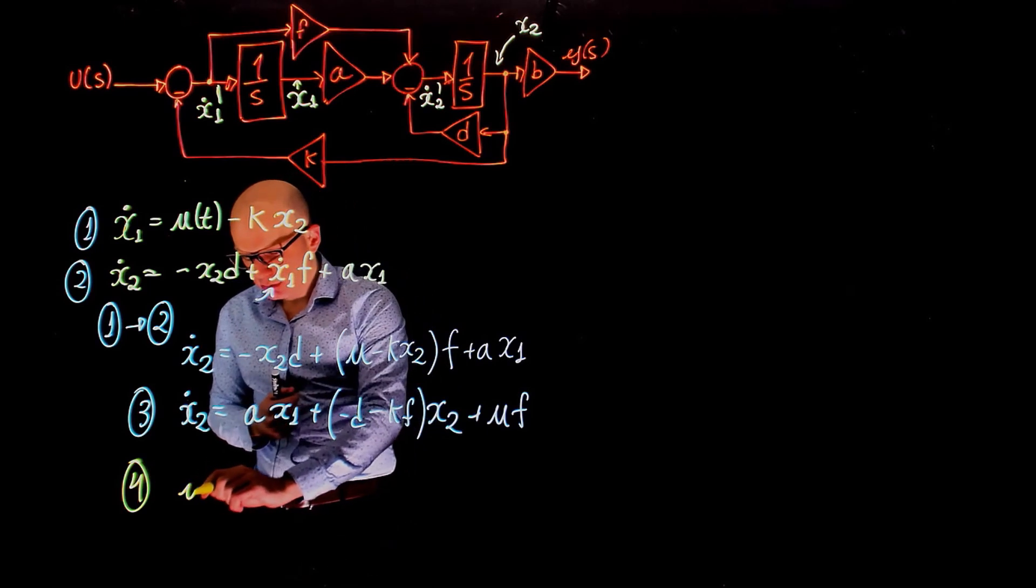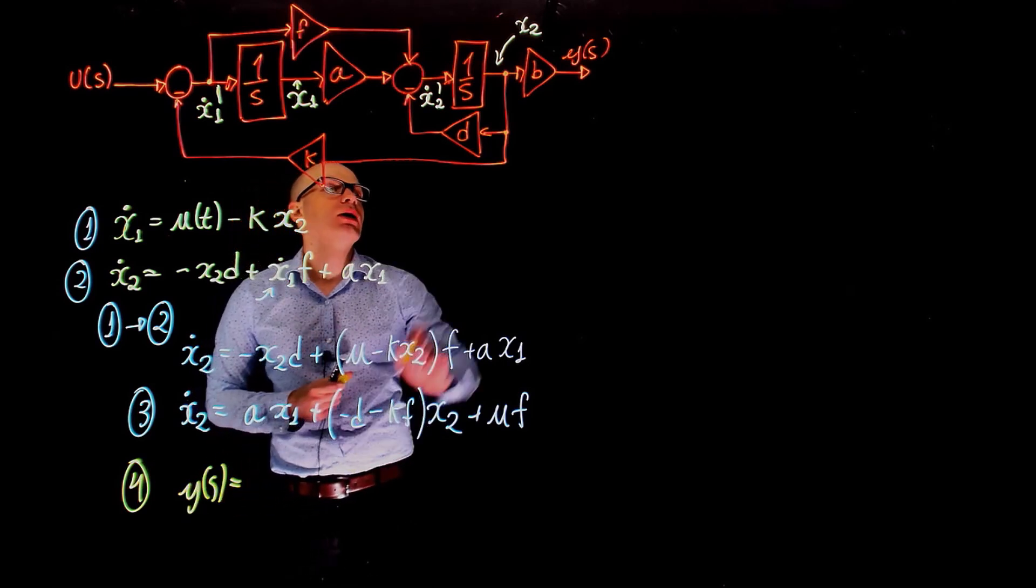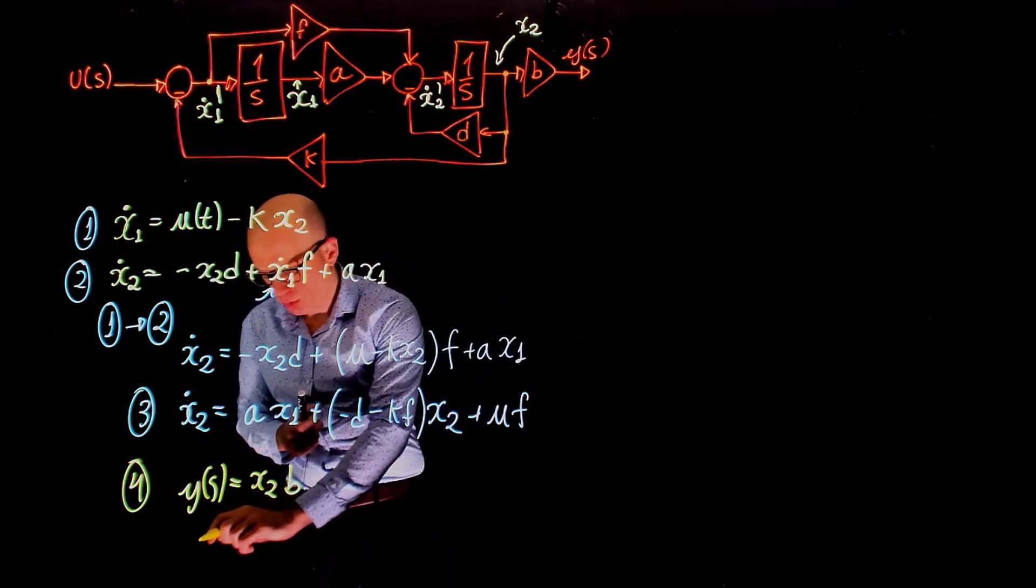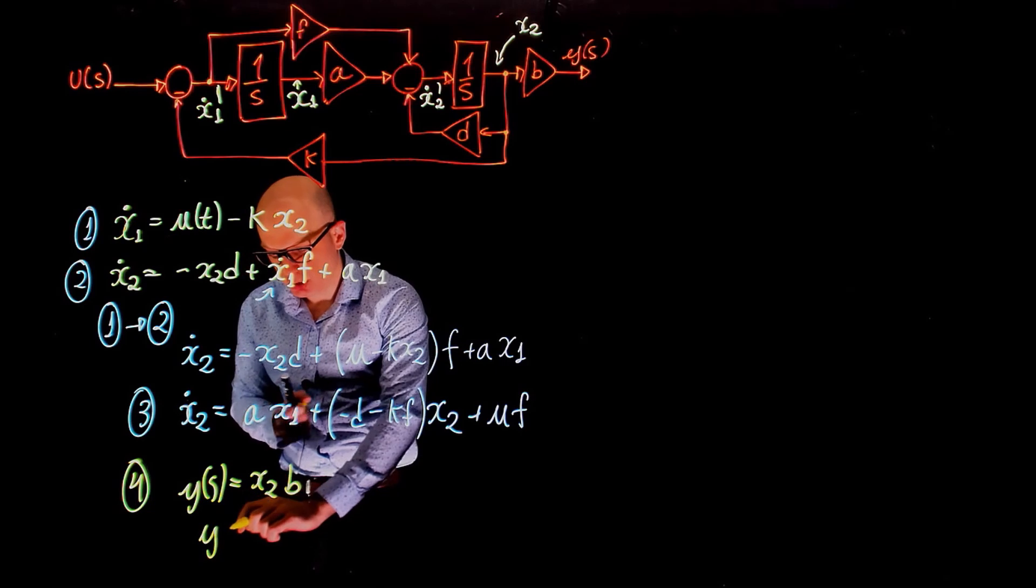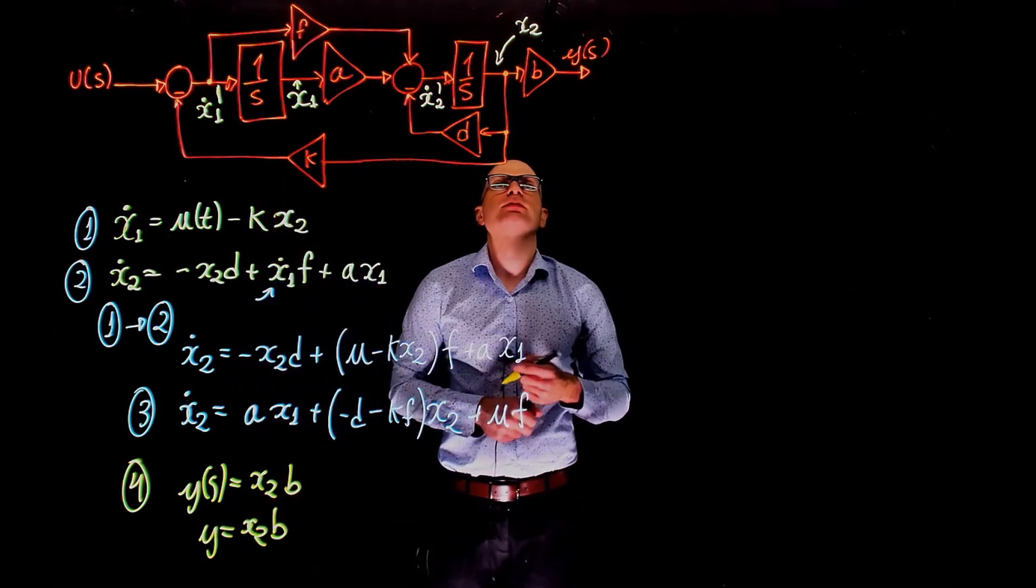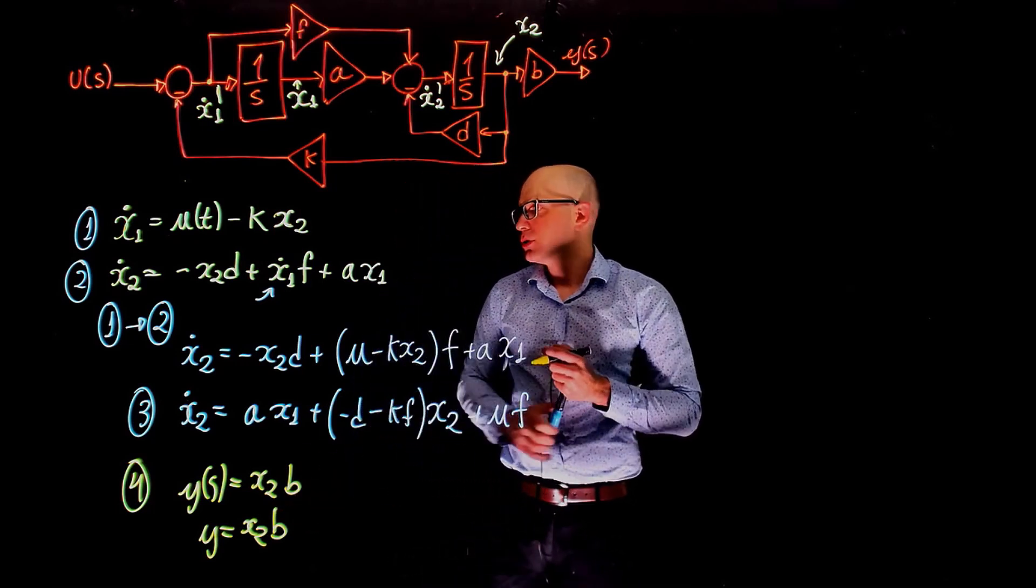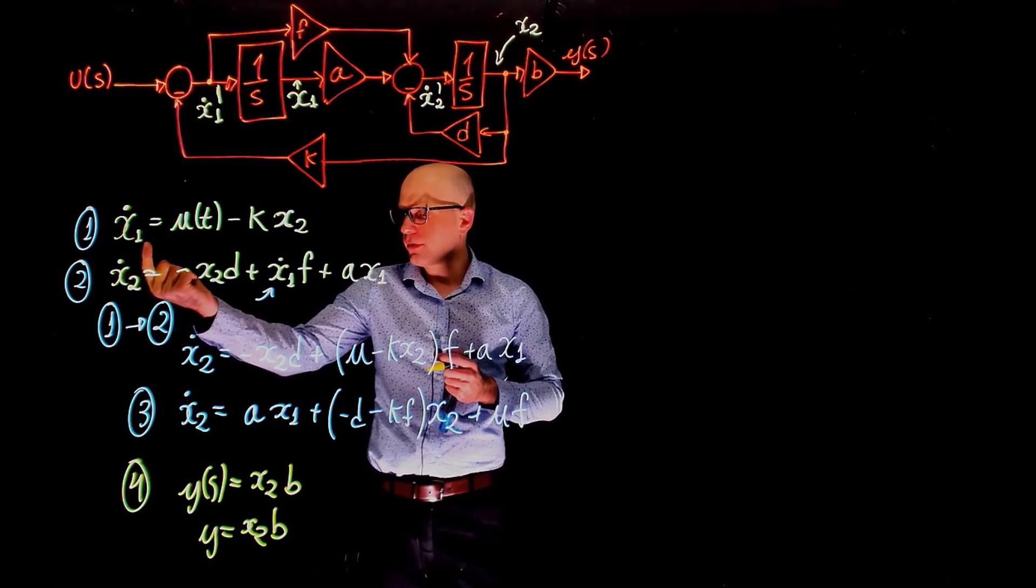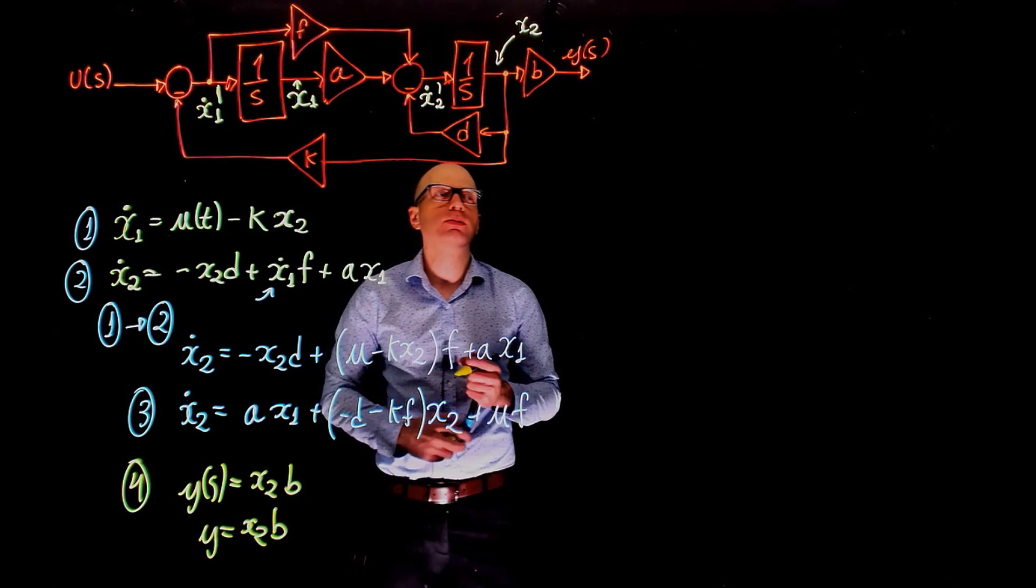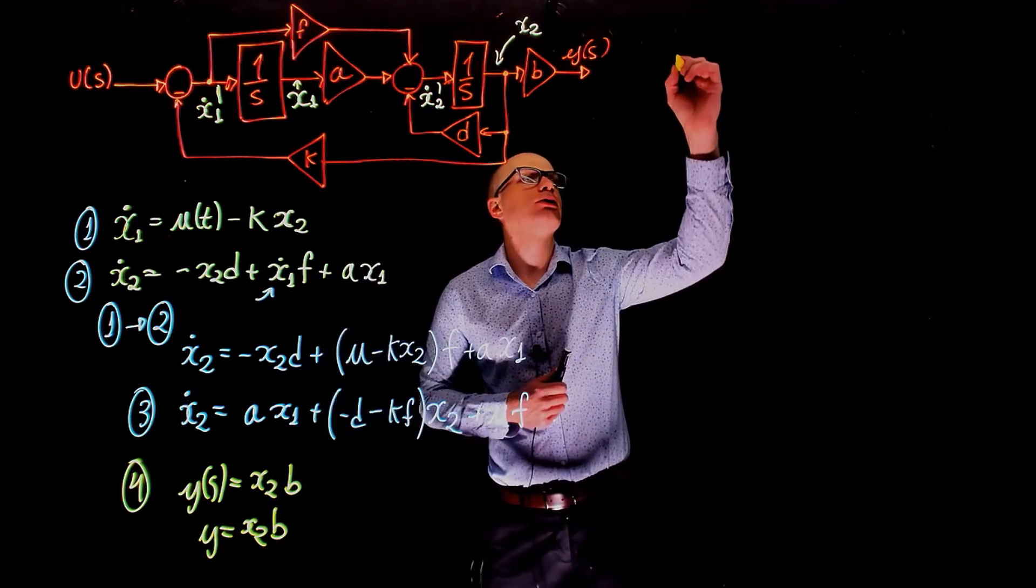This will be equation four. The output is y of s, which is x2 times b, or y of t. Let's call that y equals x2 times b. And this is the output of the system now. So here we have the first equation x1 dot, the second equation is x2 dot, and the fourth equation is the output y. So now I can start to represent this in a matrix format.